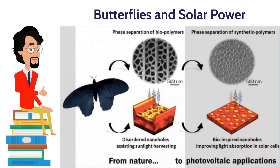The butterfly's wings are an elegant feature, but also possess impressive solar properties. The rose butterfly has tiny cells on its wings and can collect light at any angle. The black wings have inspired a new type of solar cell that is two times more efficient at collecting light. This idea has improved the efficiency of solar cells drastically.